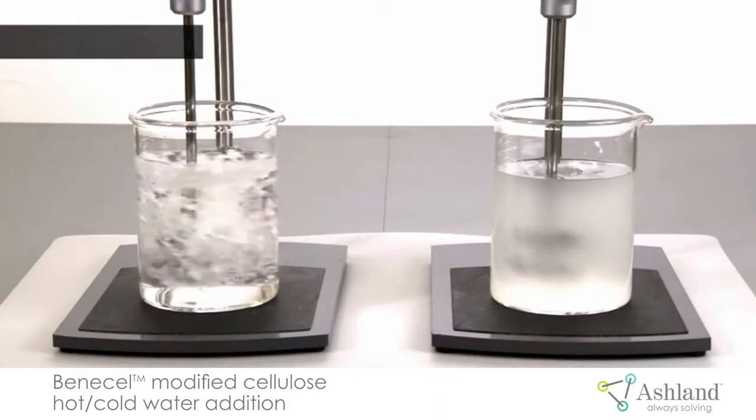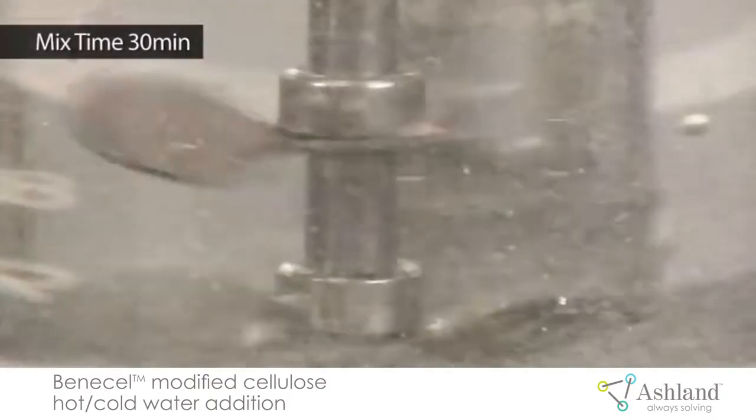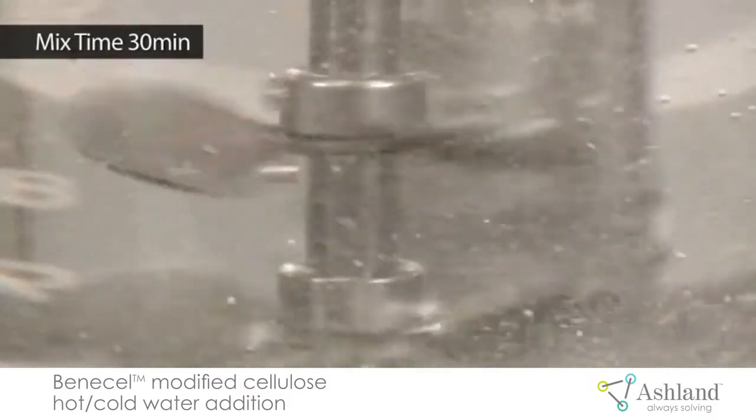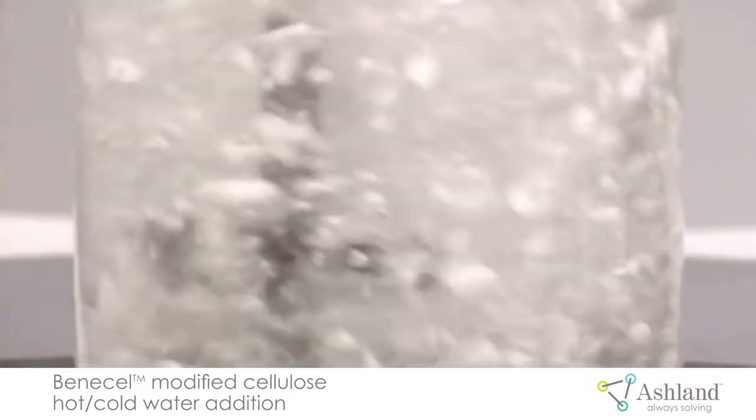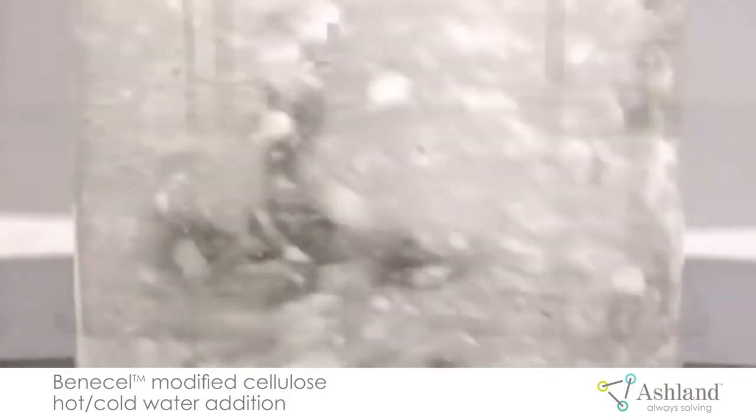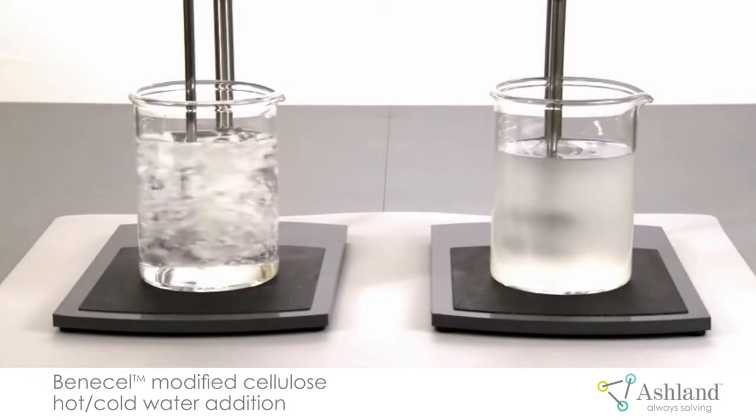We stirred the ambient temperature solution alongside the hot-cold solution of Benecel modified cellulose for about a half an hour. You can see that the hot-cold method was a much easier dispersion method. After half an hour, the solution on the right has cooled enough to allow the Benecel modified cellulose to hydrate.